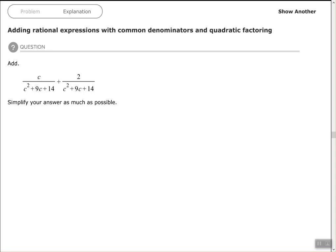Hey, good people, Arthur Morris here. I hope all is well. In this video we're going to look at adding rational expressions with common denominators and quadratic factoring. All right, so we still have a common denominator with our c² plus 9c plus 14.